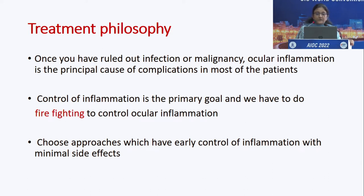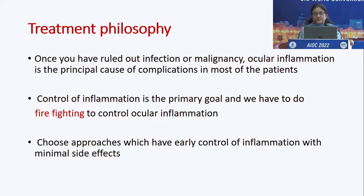Eye diseases are among the most feared health conditions; a survey has shown that 60% of people consider blindness as bad as death. Uveitis is a potentially sight-threatening disease occurring due to infection or autoimmune etiology. Once infection or malignancy is ruled out, ocular inflammation is the principal cause of complications, and the control of inflammation is the primary goal — we must approach it like firefighting to control destruction. We must choose approaches with early control of inflammation and minimal side effects.